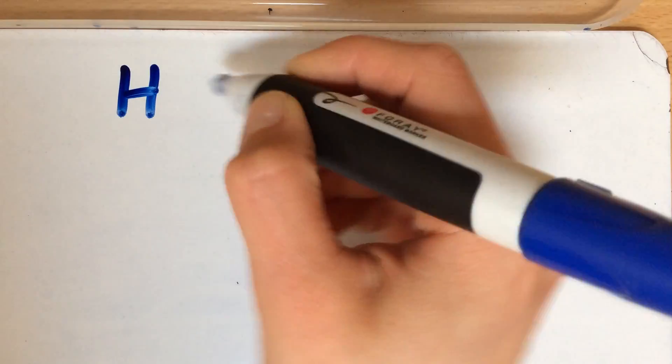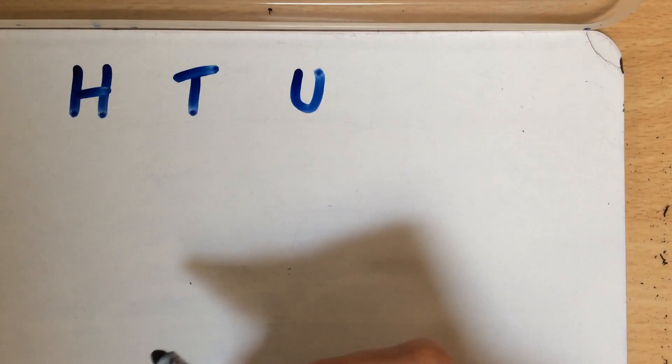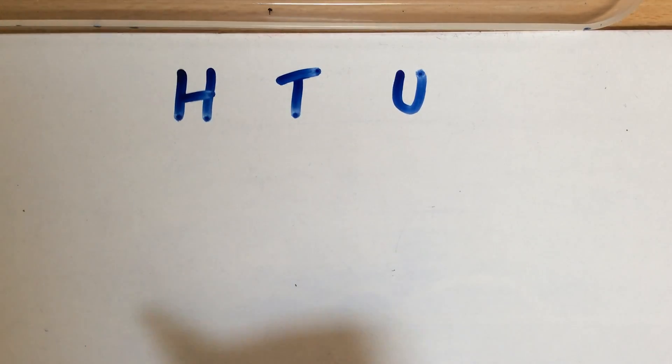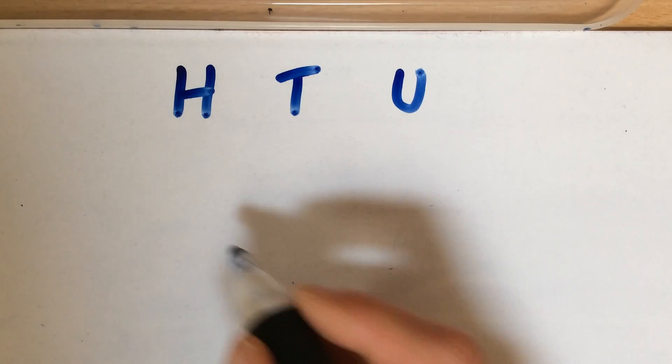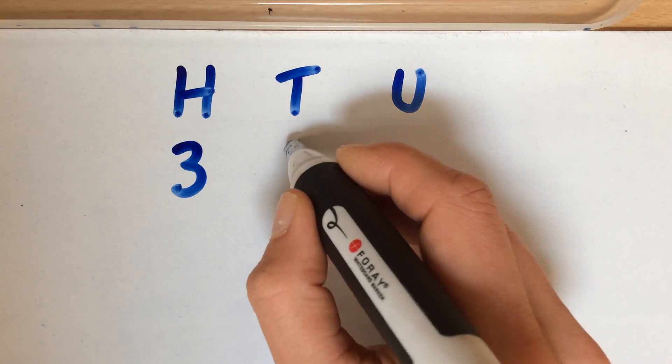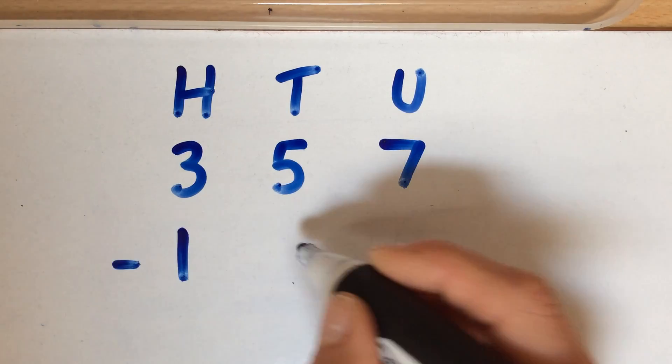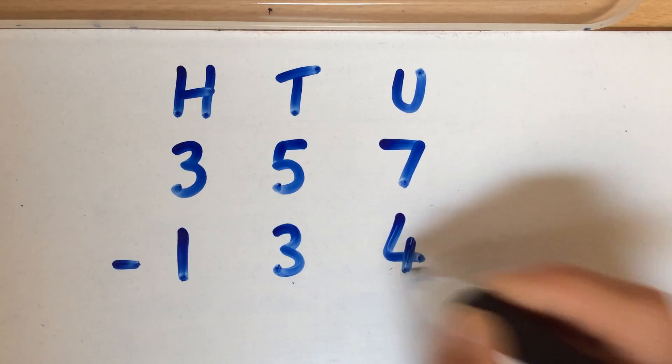Things to remember: you're always keeping the numbers in the correct column, whether it's 2-digit, 3-digit, 4-digit, etc. So if you've got something like 357 take away 134.